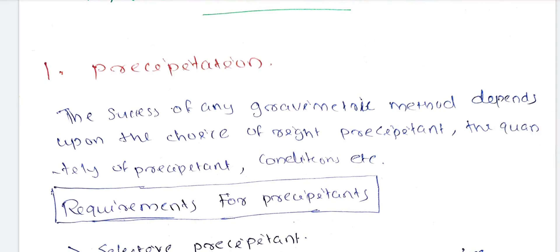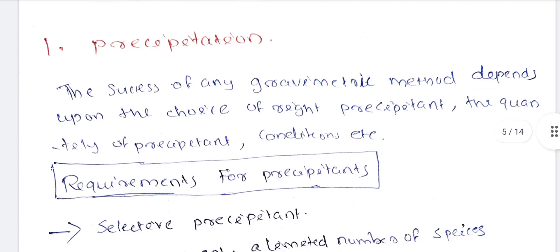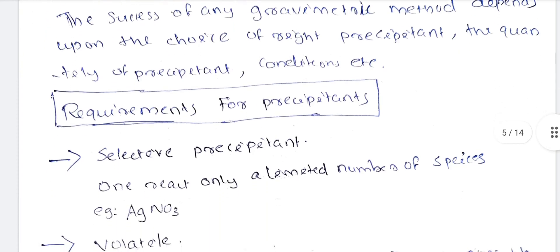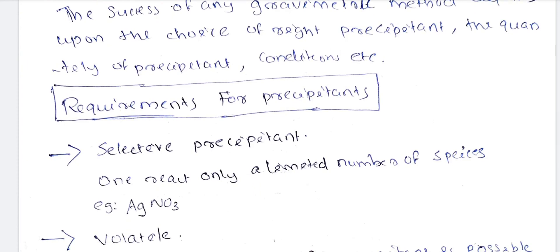In this chapter on 5th semester Inorganic Chemistry, the success of any gravimetric method depends upon the choice of the right precipitant, quantity of precipitant, and conditions. These are the precipitation requirements. We will also discuss what are the differences between precipitation, co-precipitation, and post-precipitation.